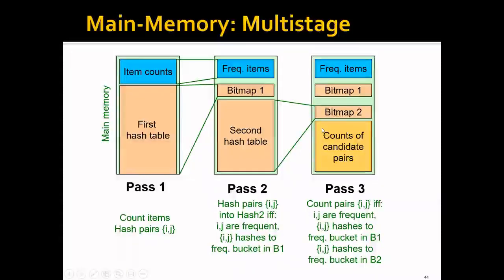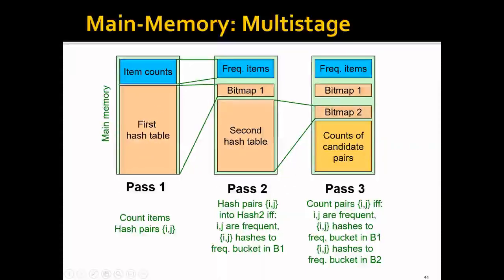Let me go into more details. This is the overall process of the multi-stage algorithm. In pass one, it's exactly the same: we count the items and we hash the pairs. In the second pass, we shrink the hash table into a bitmap, and here starts the difference.